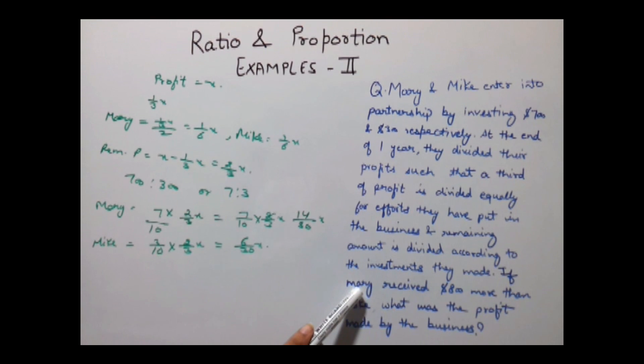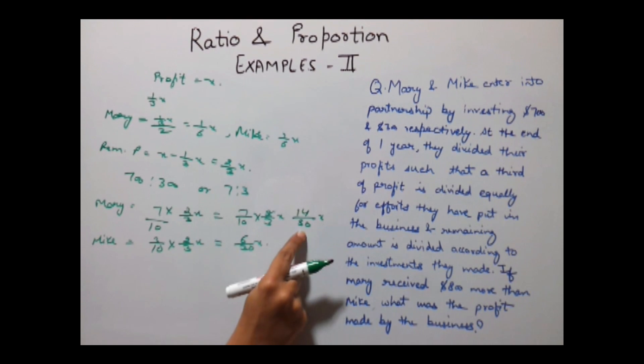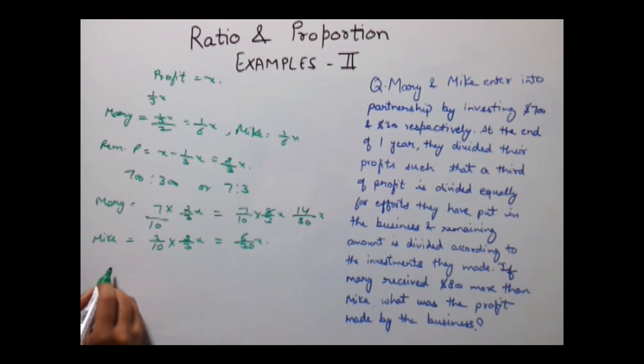So if we subtract $800 from Mary's profit, that would be equal to Mike's. Mary's profit would be equal to this profit plus the share that they have divided equally.